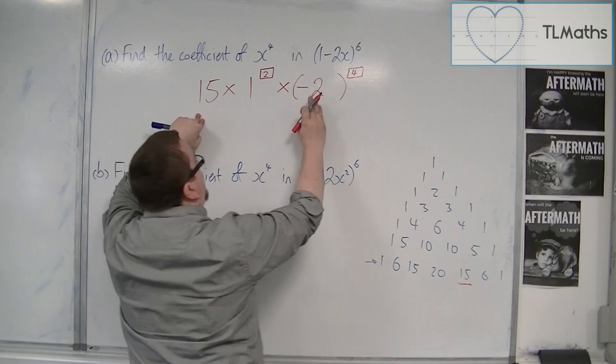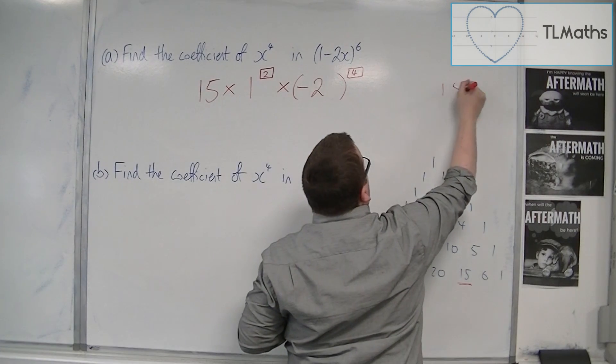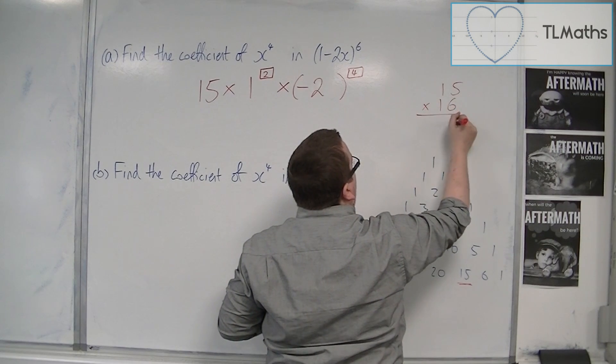Now minus 2 to the 4 is 16. So I've got 15 times 16. So if I need to do a little bit of a sum on the right-hand side, then so be it.